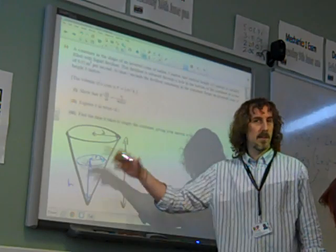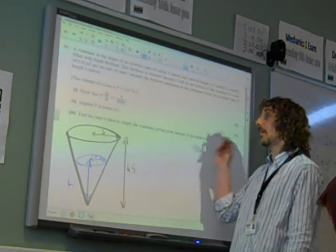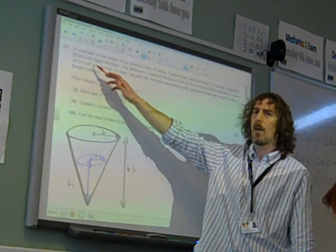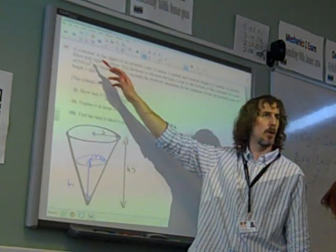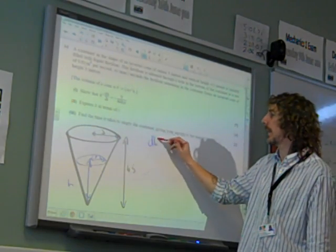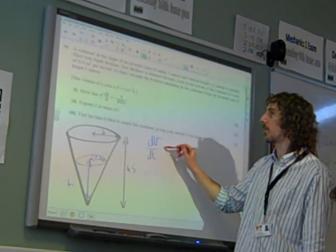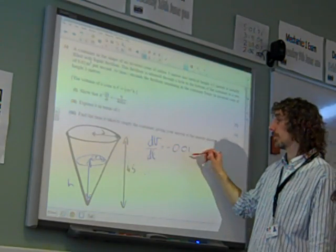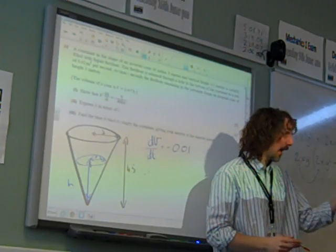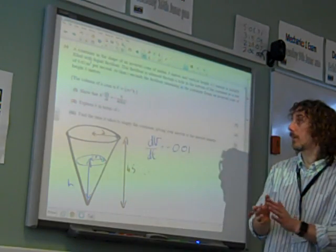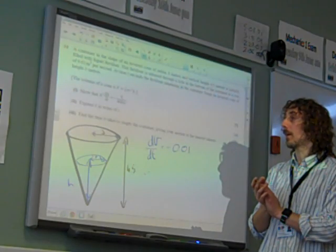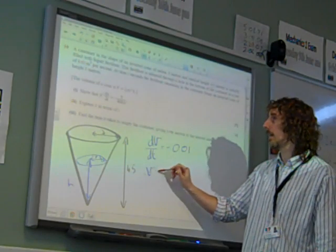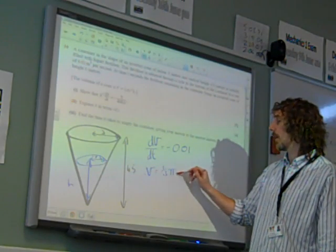And actually, we need to kind of link some of these things together. We're also given in the question that the fertilizer is released at this rate. This is meters per second. So that is dV by dt, isn't it? And it's going down at that rate, and that's minus 0.01. And I think that's just kind of taking down the information from the question and thinking where we go with it. So we've got to end up with dH by dt.